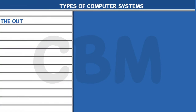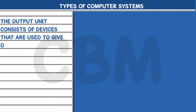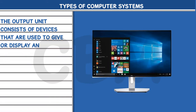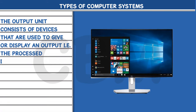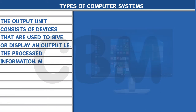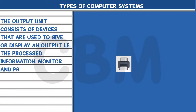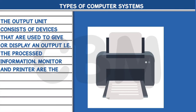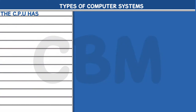Output Unit: The output unit consists of devices that are used to give or display the processed information. Monitor and printer are the most commonly known output devices. The CPU has three main components.